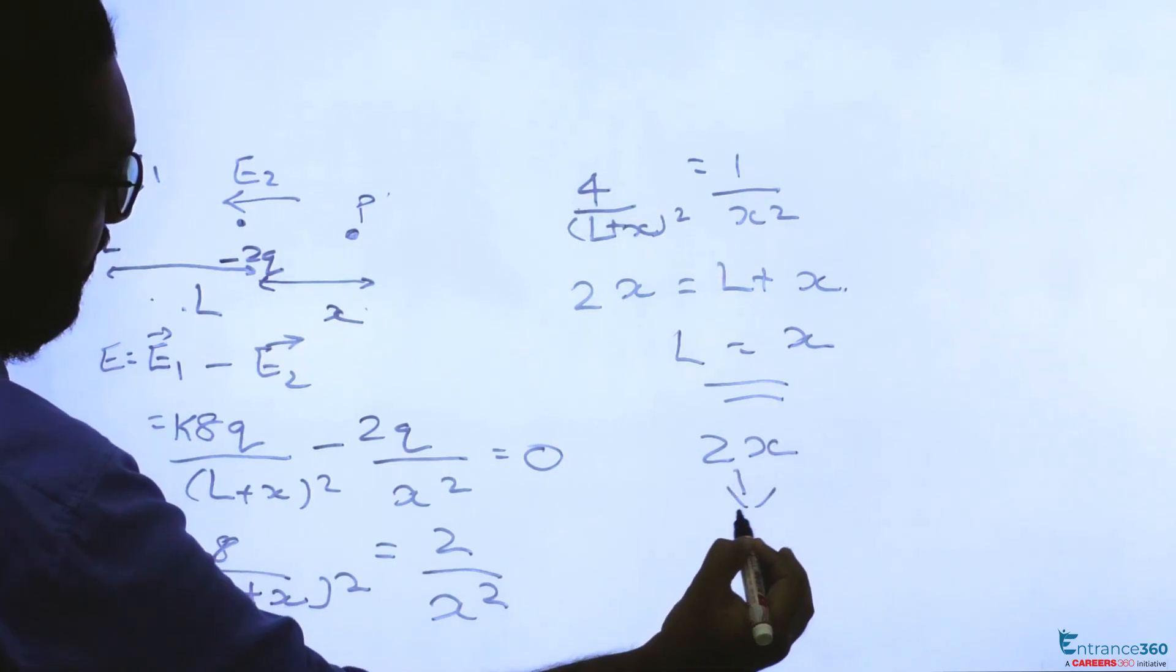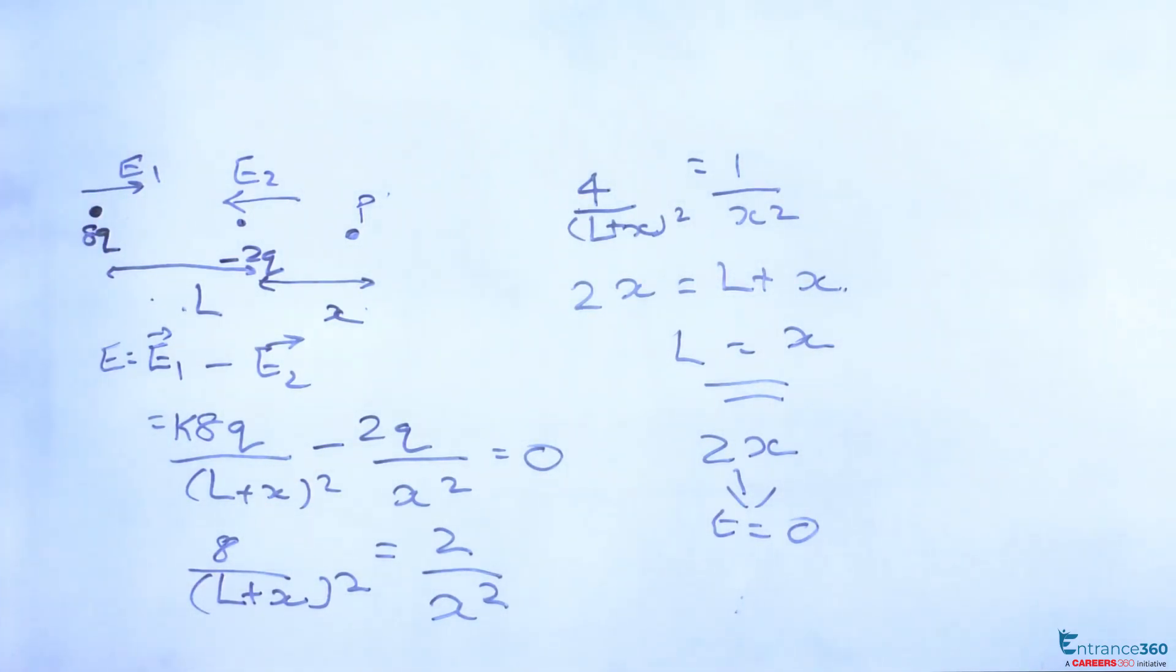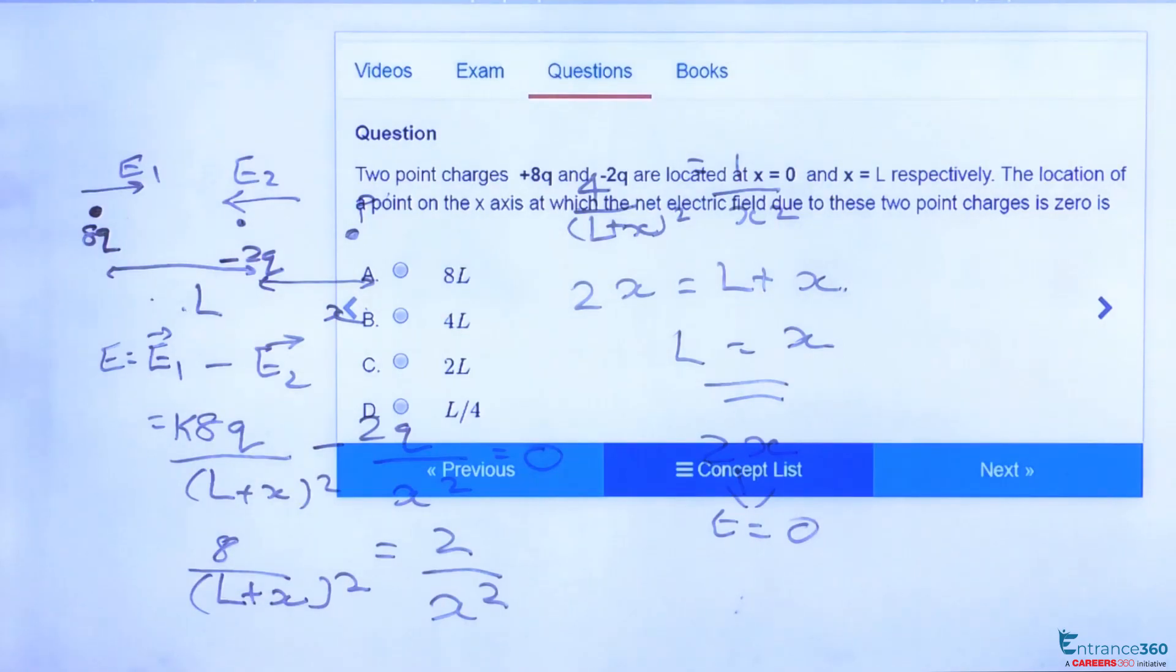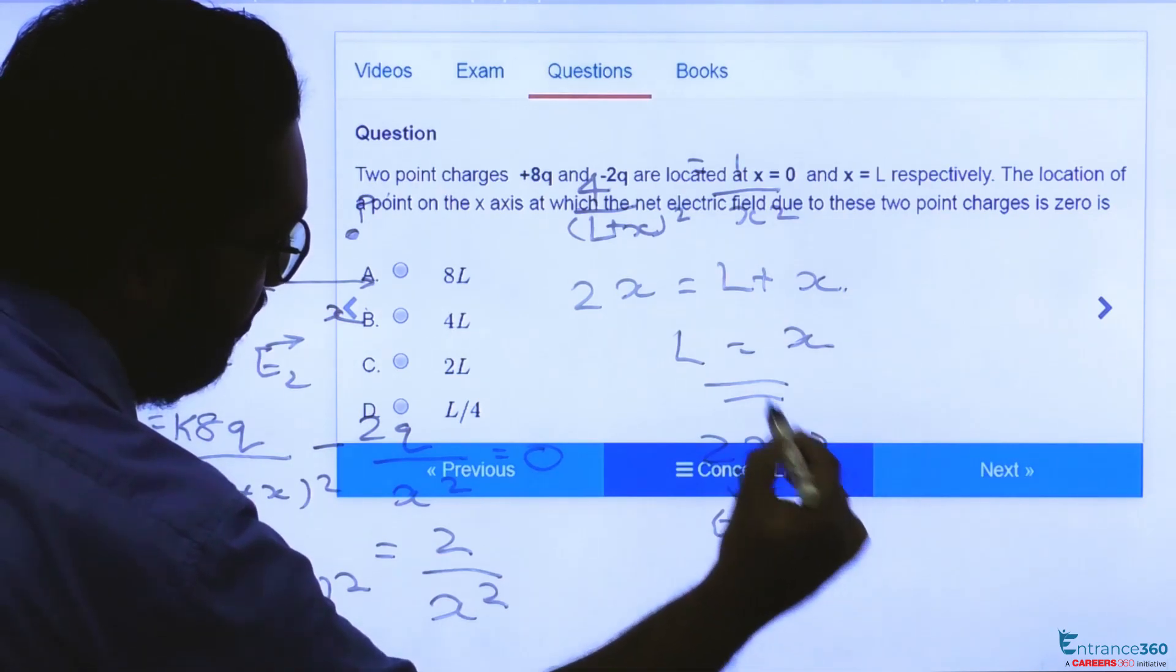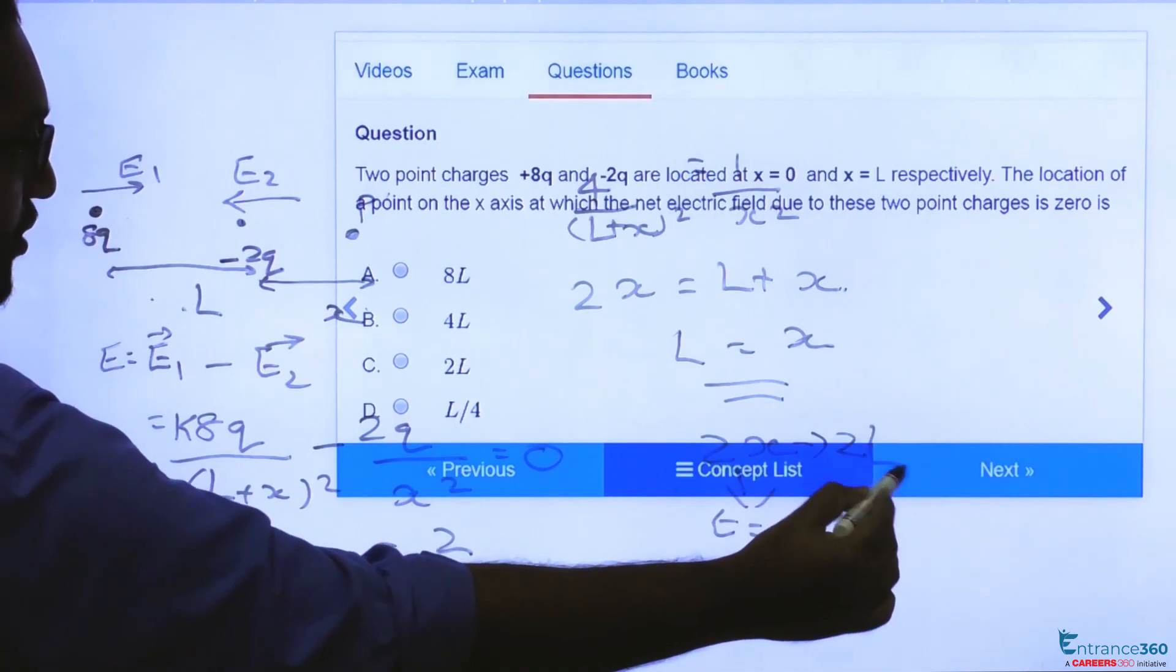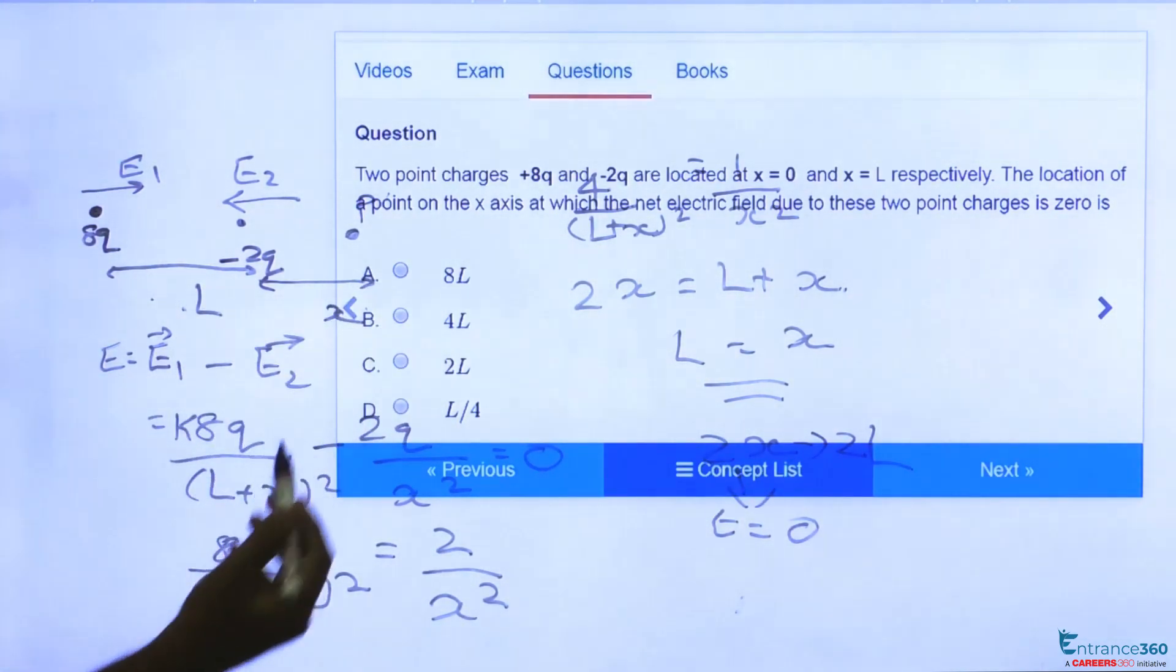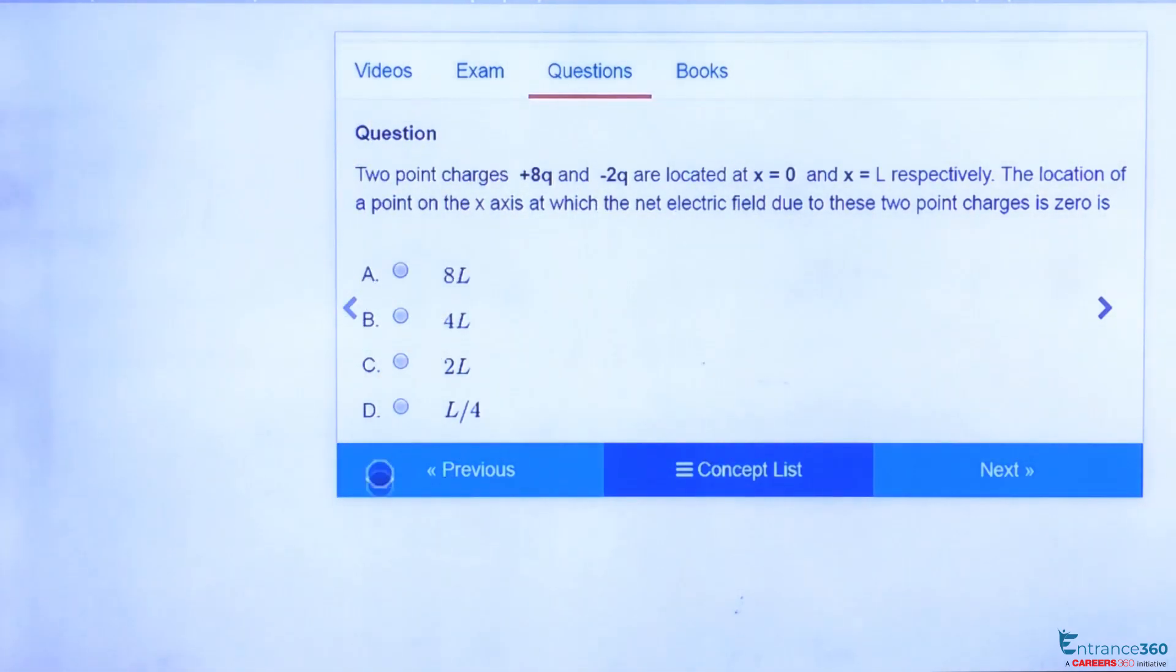Our electric field is zero. We can write x equals x because L equals x, so 2L is our option C. So C is the right answer. To know more about this concept, you can watch the video here.